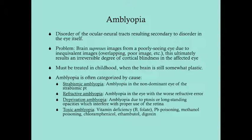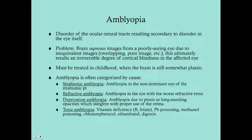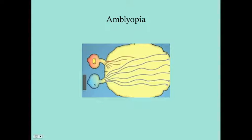For completion's sake, toxic amblyopia is an amblyopia that's secondary to either a nutritional deficiency — usually B vitamins or folate — or some kind of toxicity. Deprivation amblyopia is the worst kind of amblyopia that you can have. This diagram shows that if there's some kind of disease process going on in the right eye, it's not going to form the neurologic connections to the visual cortex.